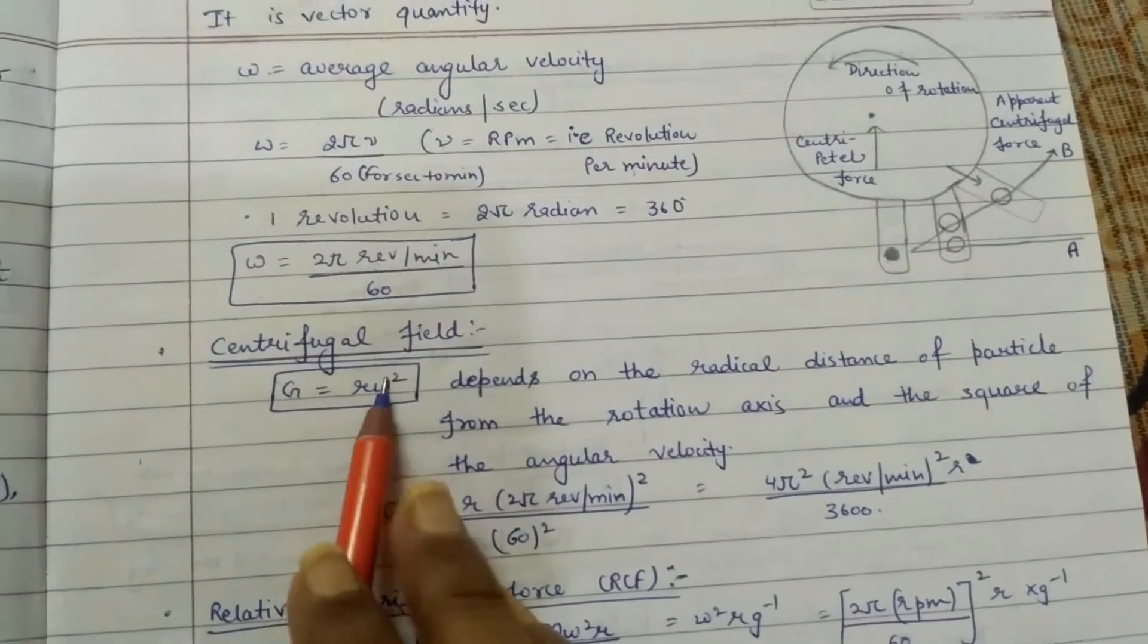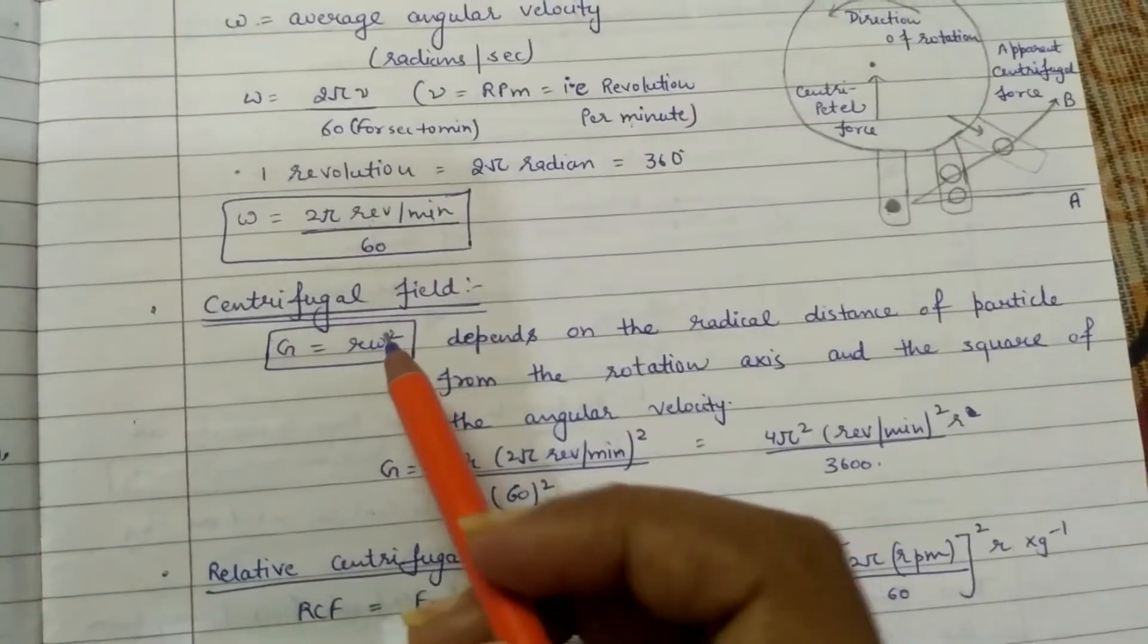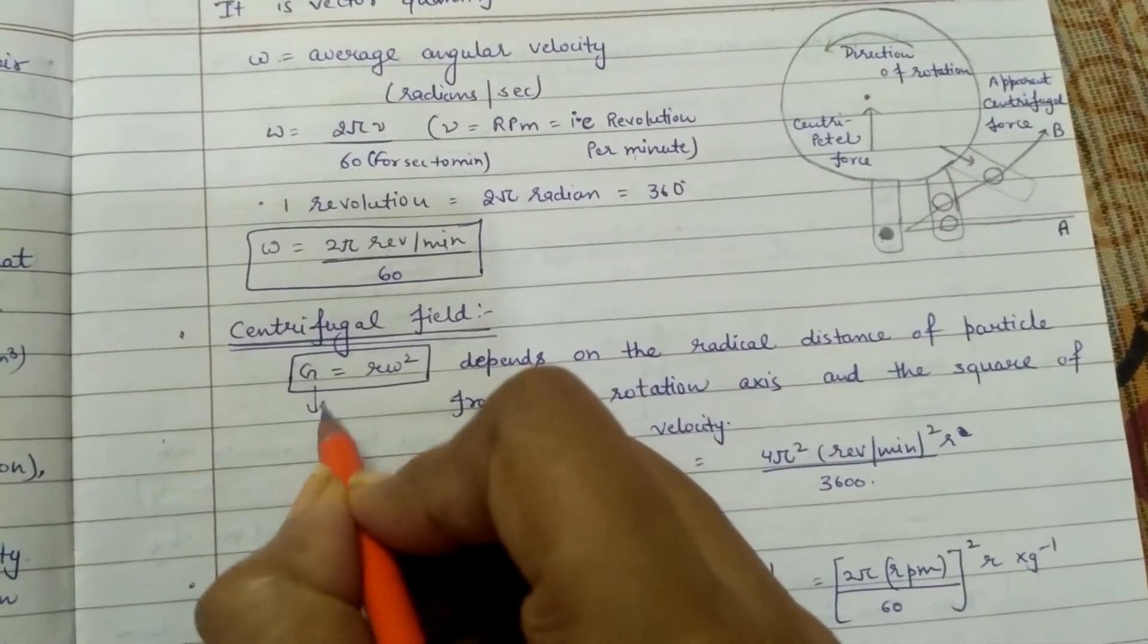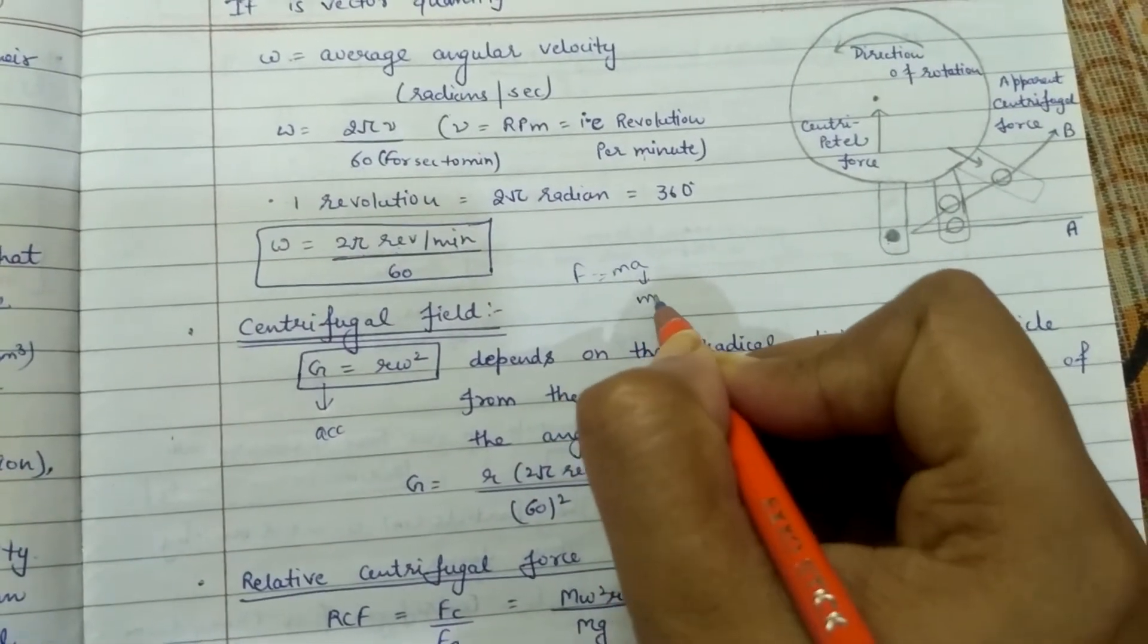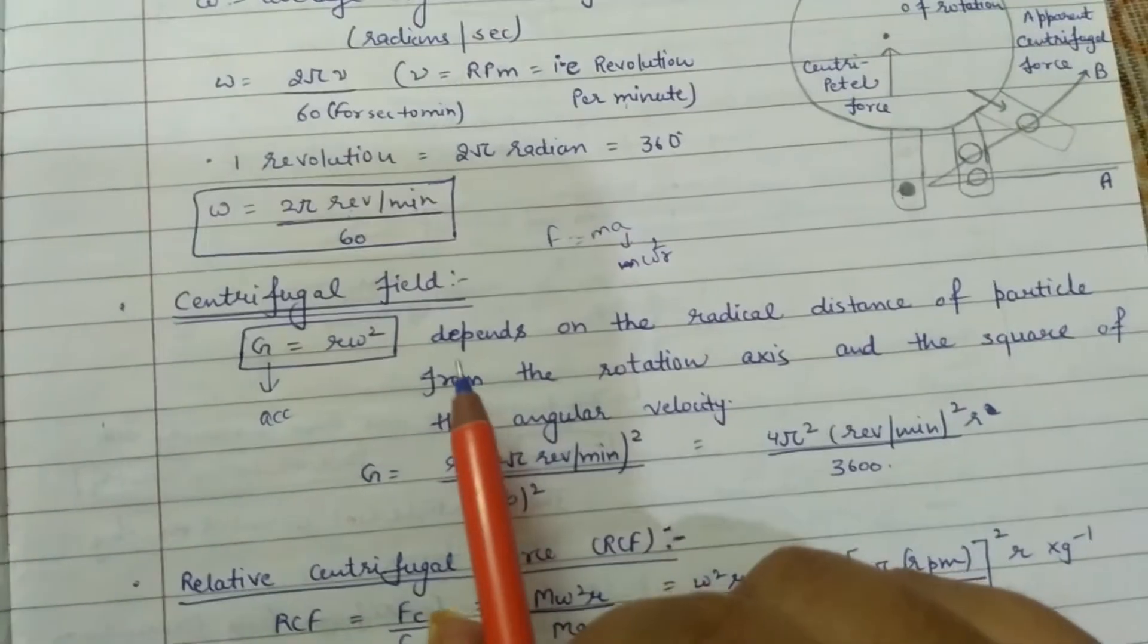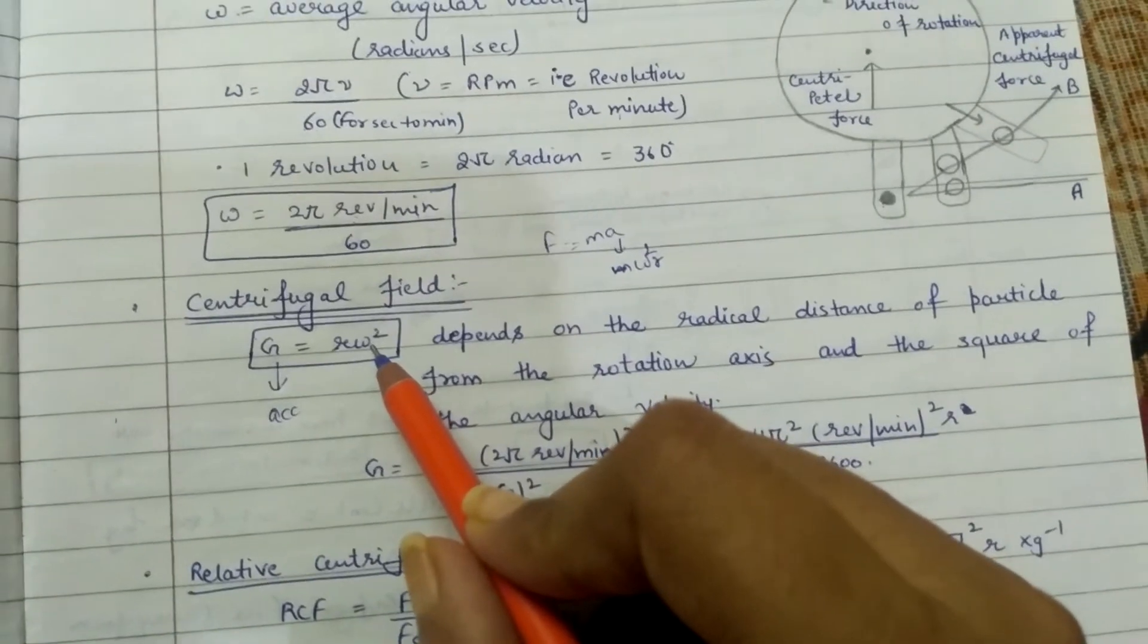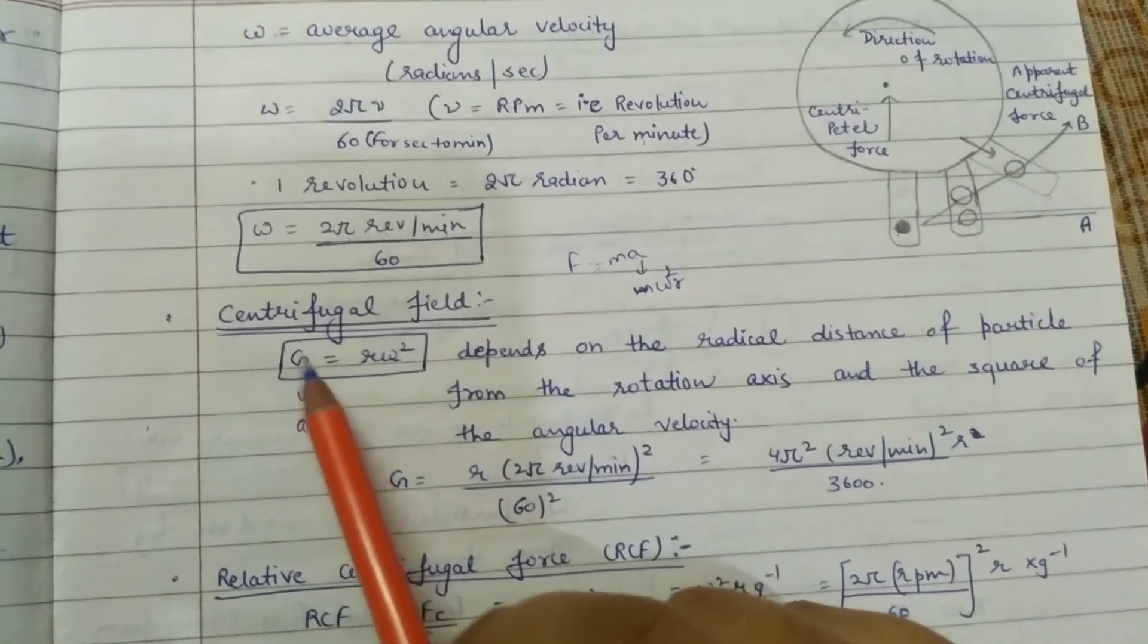The centrifugal field is like a gravitational field. The centrifugal field equals r omega square, which depends on the radial distance. This acceleration depends on the particle's radial distance from the rotation axis and the square of the angular velocity.